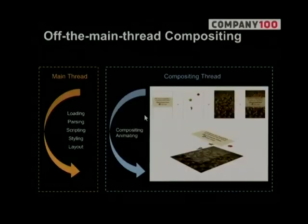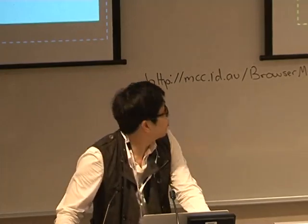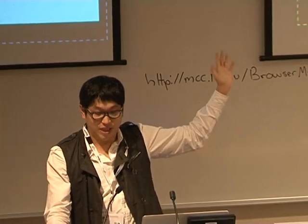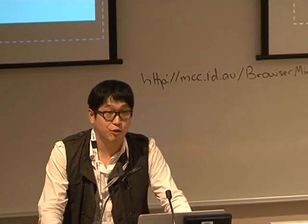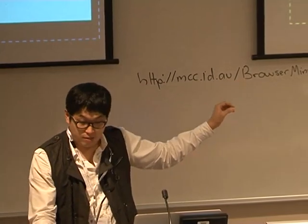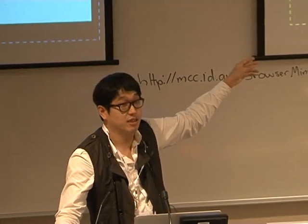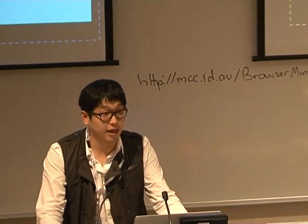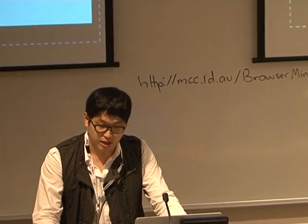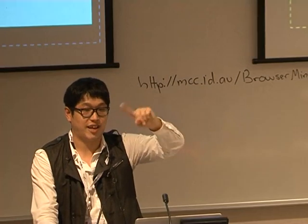Off-main-thread compositing means performing compositing on a separate thread rather than the main thread. Therefore, we can utilize multi-core CPUs, and by having a separate thread we can bring significant performance improvement — especially for CSS animations and zoom and scrolling. It also improves responsiveness to user events like touch events.